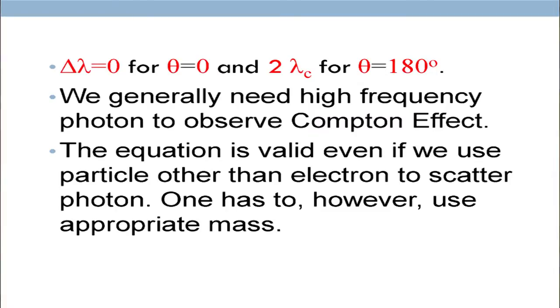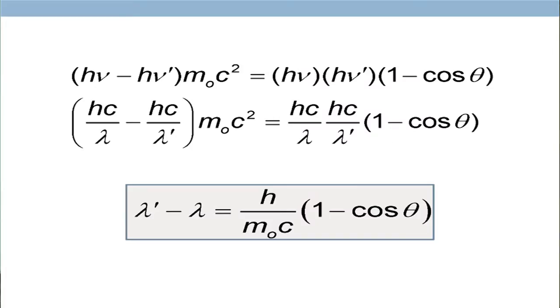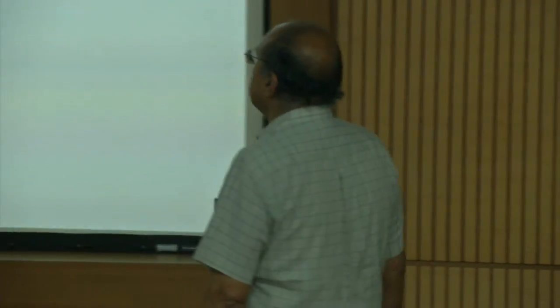Delta lambda equals zero for theta equals zero. If you put theta equal to zero, cosine theta equals 1, so there is no change. If the photon doesn't get scattered, obviously there cannot be a change in wavelength — which is obvious.